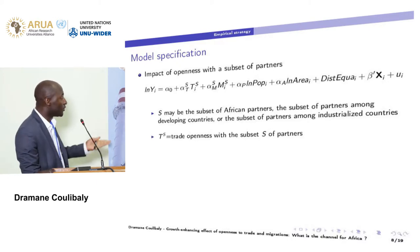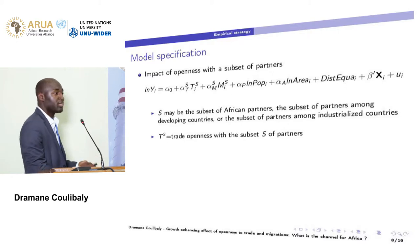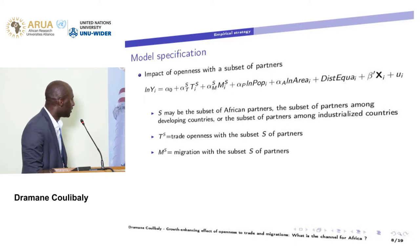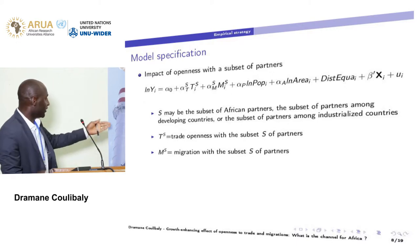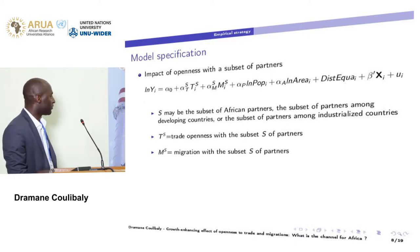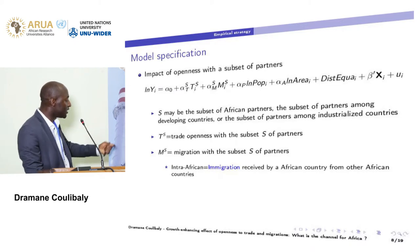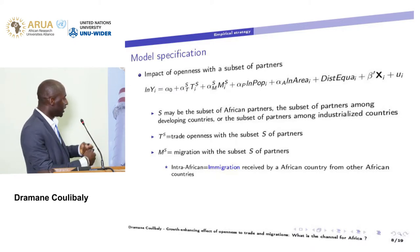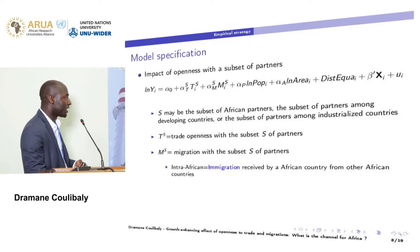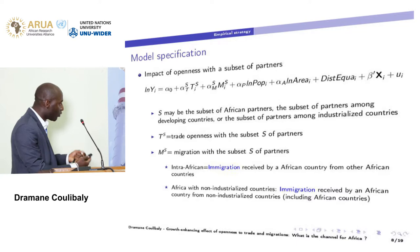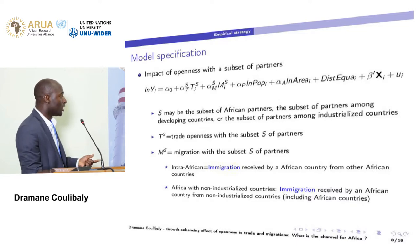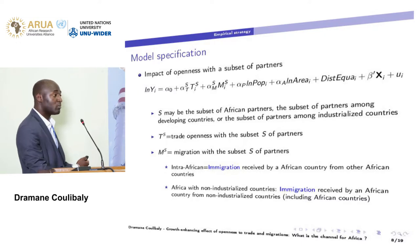For trade, we take a measure of trade openness with the subset of partners. For immigration, the definition depends on the subset of partners. For example, in the intra-African case, we measure immigration received by an African country from other African countries.